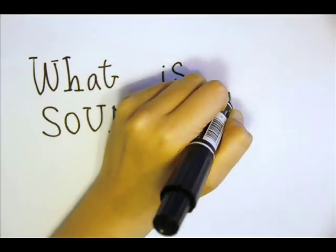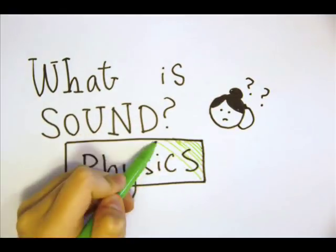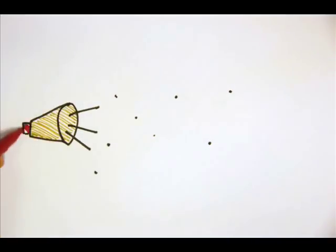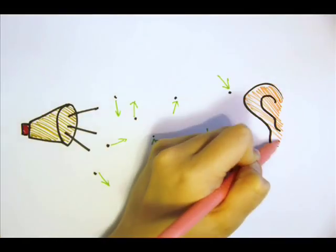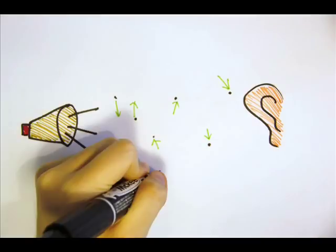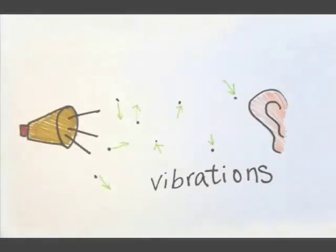To start with, we have to learn about sound from a physics point of view. Sound results from continuous vibrations of air particles, which in turn vibrate our eardrums. Our brains then interpret these wave-like vibrations as sounds.